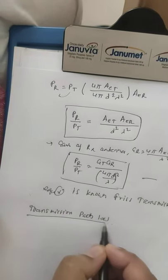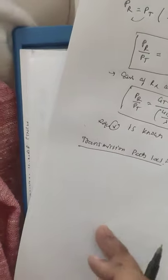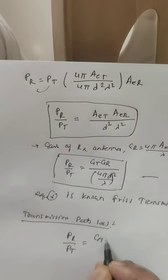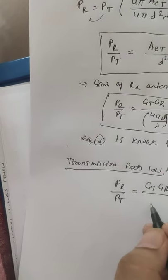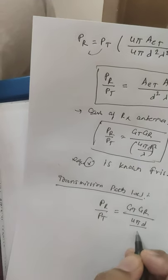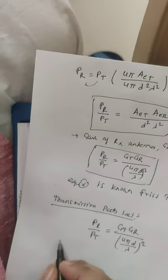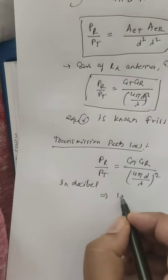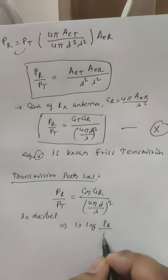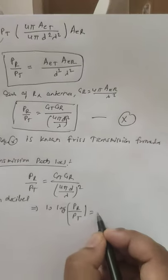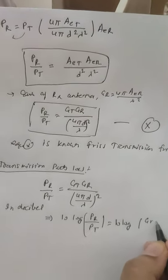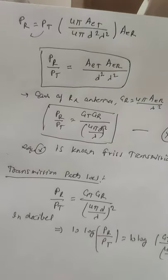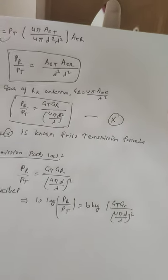Moving to path loss: from the Friis transmission formula, PR/PT equals Gt × GR × (lambda/4πD)². Writing this in decibels: 10 log(PR/PT) = 10 log(Gt) + 10 log(GR) + 10 log(lambda/4πD)². The last term, taken with a negative sign, represents the path transmission loss. Taking the square outside the log gives a factor of 20, so the spatial attenuation term becomes 20 log(4πD/lambda).